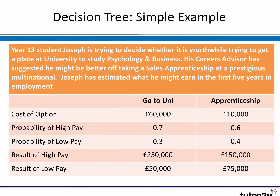Here's a simple example. Year 13 student Joseph is deciding whether it's best to get a place at university to study business psychology, or to take a place as a sales apprentice at a prestigious multinational — in other words, start working rather than go to uni. He's worked out what he might earn in the first five years in employment, for both options, along with the different costs of each option and the different probabilities of high pay and low pay. So we've got all the data we need. If you want, stop the video and have a go constructing your own decision tree.